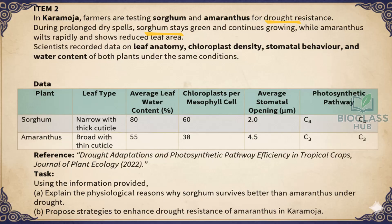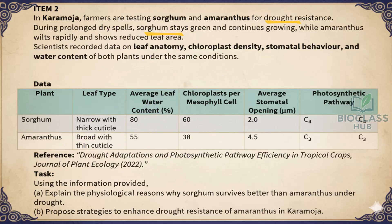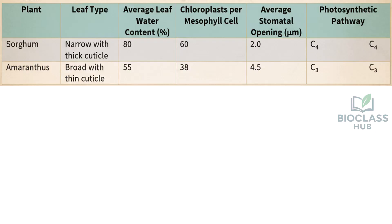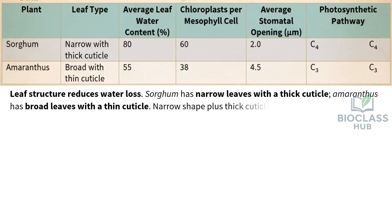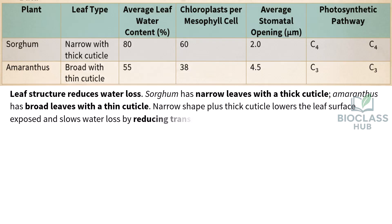Part A: Explain the physiological reasons why sorghum survives better than amaranthus under drought. Leaf structure reduces water loss: sorghum has narrow leaves with a thick cuticle, amaranthus has broad leaves with a thin cuticle. The narrow shape plus thick cuticle lowers the leaf surface exposed and slows water loss by reducing transpiration.